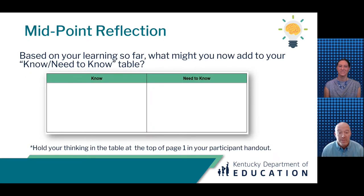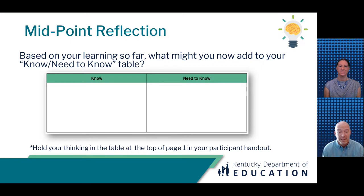Now that we are at the midpoint of the module, we want to pause and give you a chance to reflect. Based on your learning so far, what might you add to your no-need-to-know table on page one of your participant handout? This can include transferring items from your need-to-know to your know list when appropriate. Pause the video and restart after you capture your thinking.